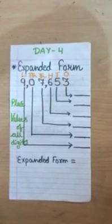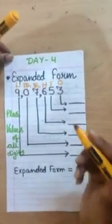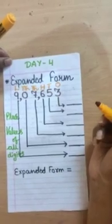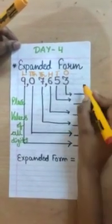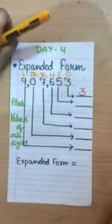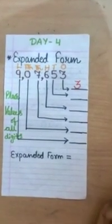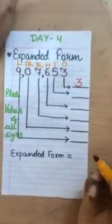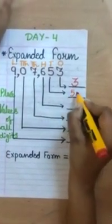Now, we are going to write the place values of each digit. Like 3 is at 1's place. So, what will be the place value? 3 multiplied with 1, it is only 3. 5 is at 10's place. So, what will be the place value of 5? 5 multiplied with 10 equals 50.